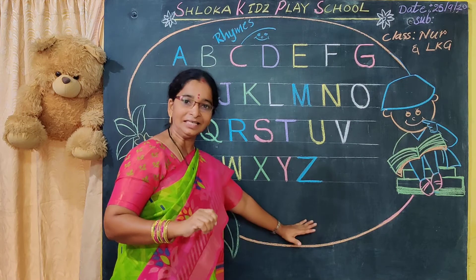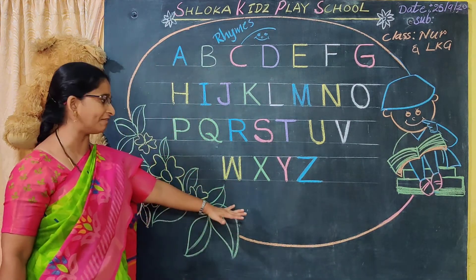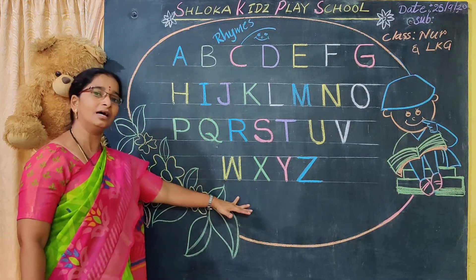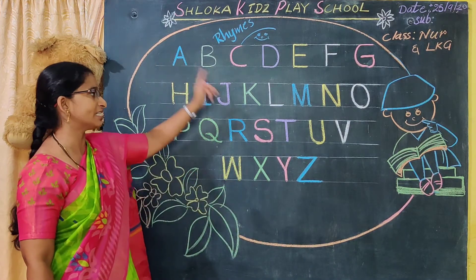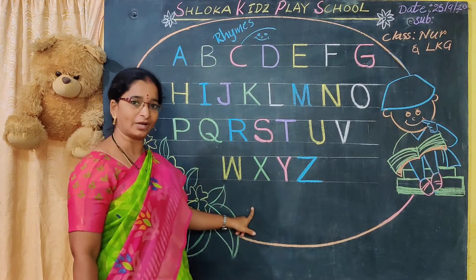So these are the English alphabets. Orally have to learn like that. And you have to recite the rhyme also at home.